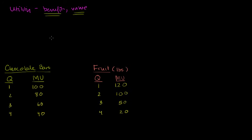Or early on, when we talked about the production possibilities frontier and the marginal benefit of another squirrel, we were talking about it in terms of berries — in terms of another good or service. What we're going to do in this video is think about it in absolute terms. We're going to think of some arbitrary way of measuring utility and assign values to what's the value of getting one chocolate bar, the next chocolate bar, and so on — and the same for fruit. From that, we're going to build up things we already know about demand curves, price, and the price of other goods.